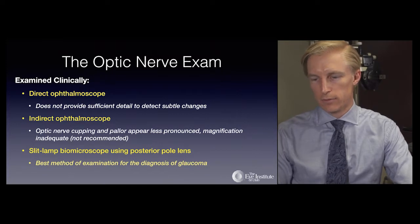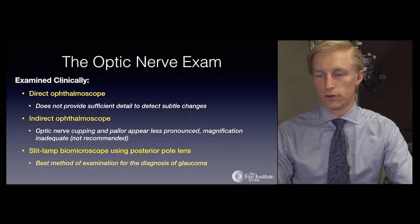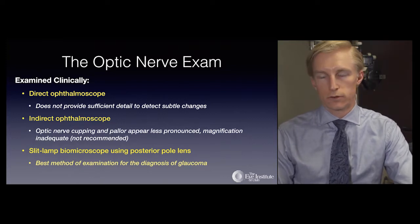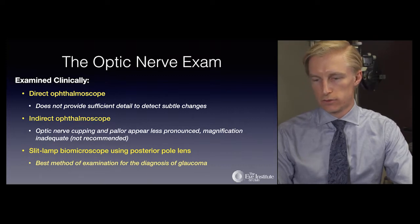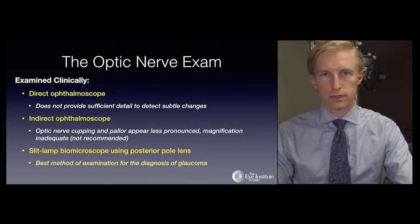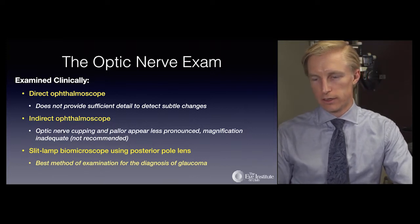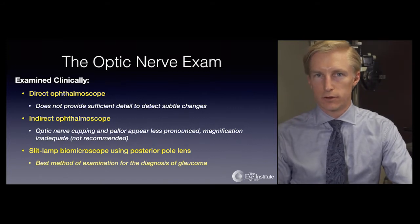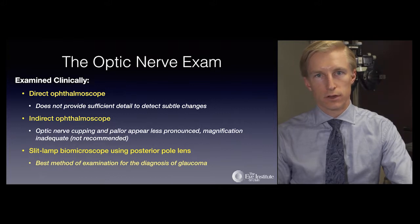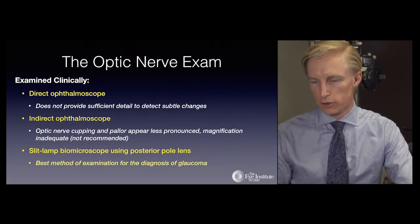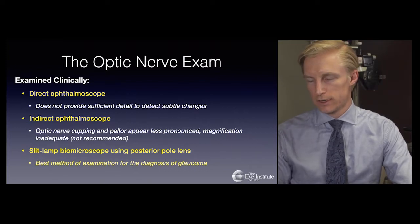The optic nerve exam can be performed in three ways: with a direct ophthalmoscope, an indirect ophthalmoscope, or a slit lamp biomicroscope using a posterior pole lens. The direct ophthalmoscope does not provide sufficient detail to detect subtle changes over time and is useful only for screening. The indirect ophthalmoscope can observe cupping and pallor but has inadequate magnification. The slit lamp biomicroscope with a posterior pole lens is the best method, providing a binocular view with excellent detail and magnification.